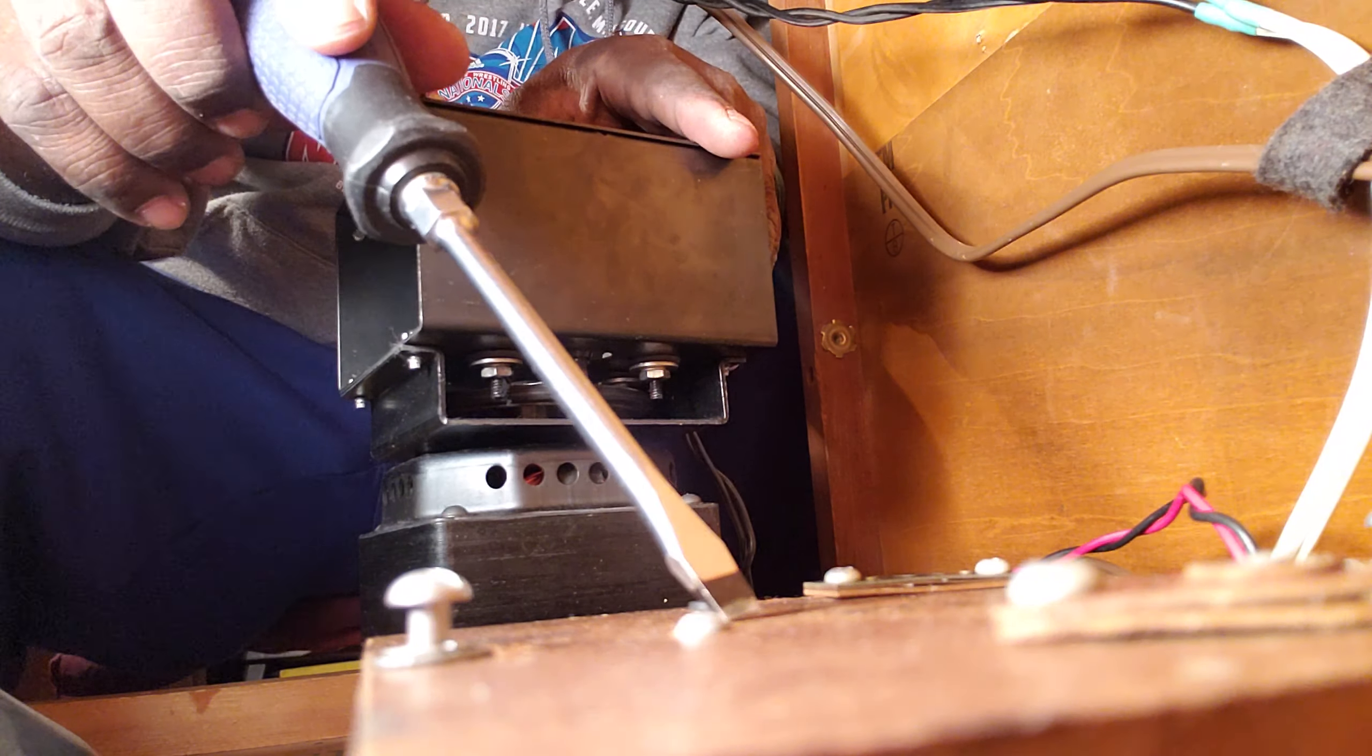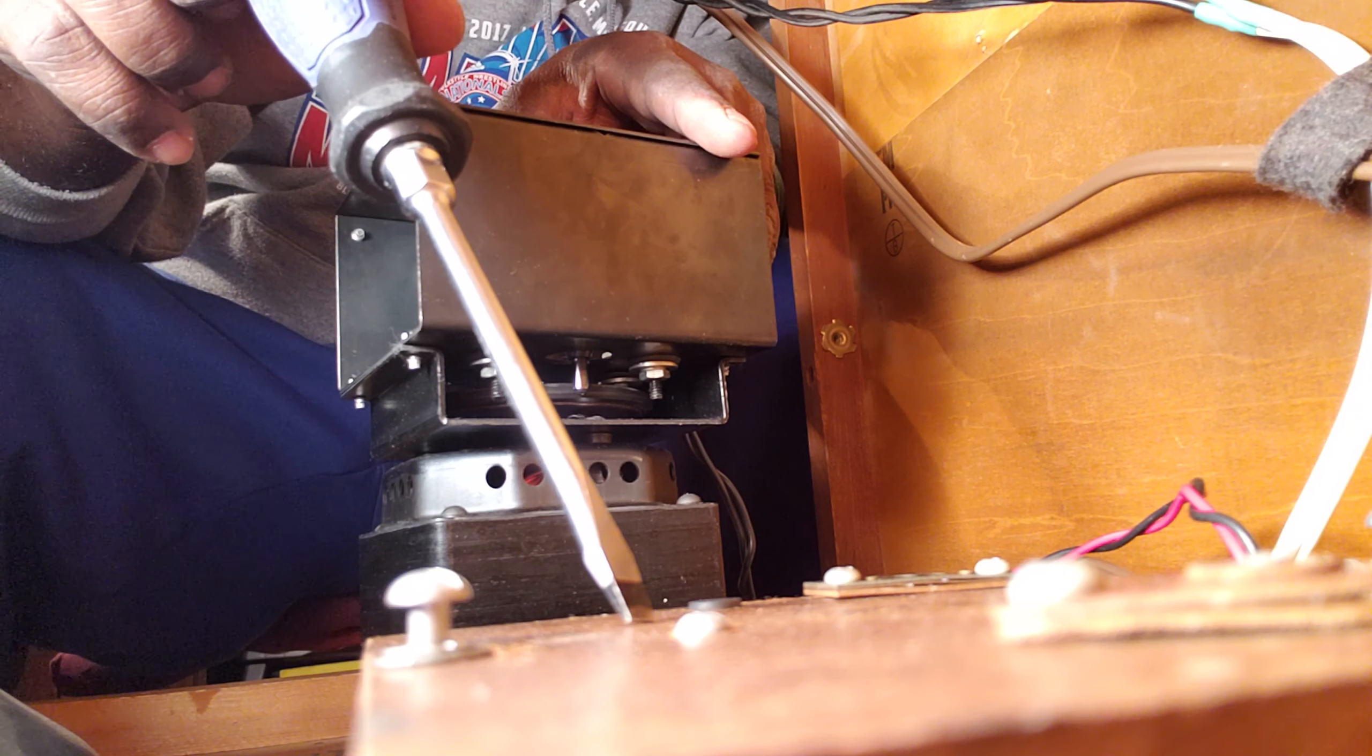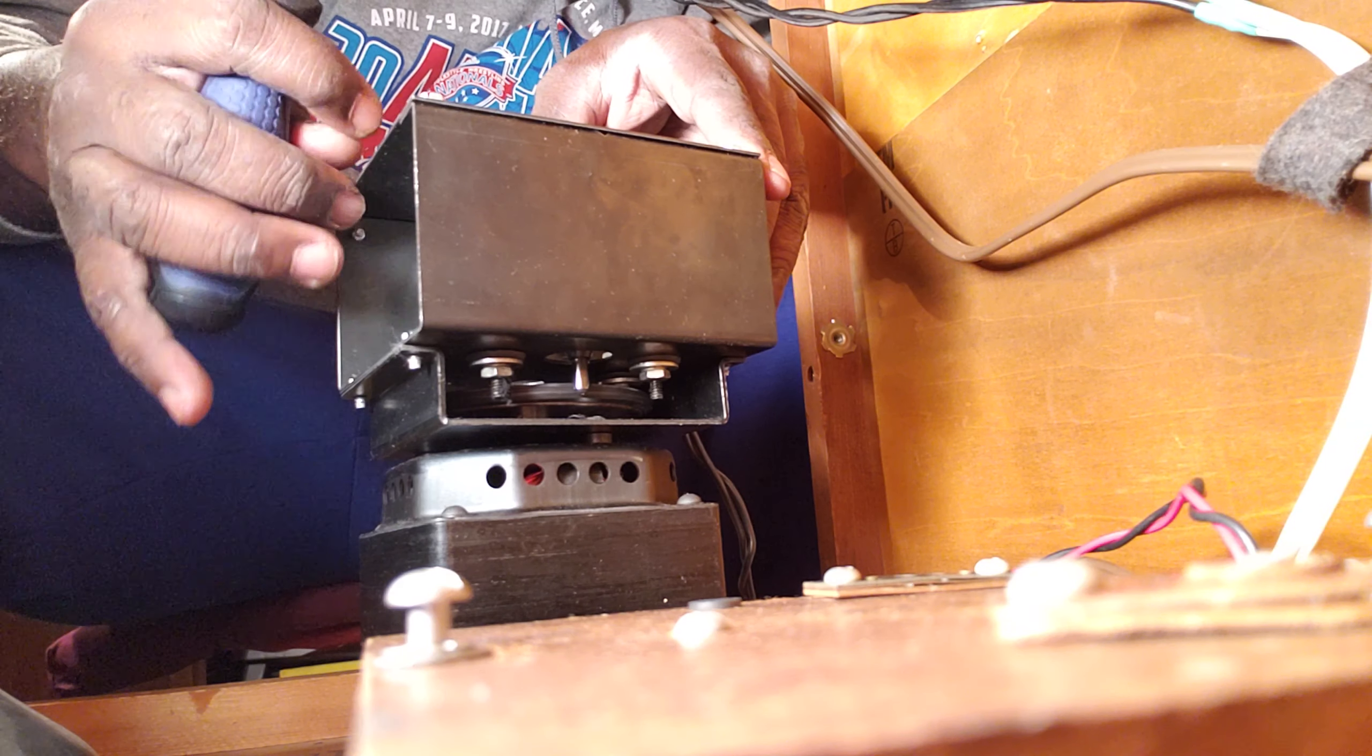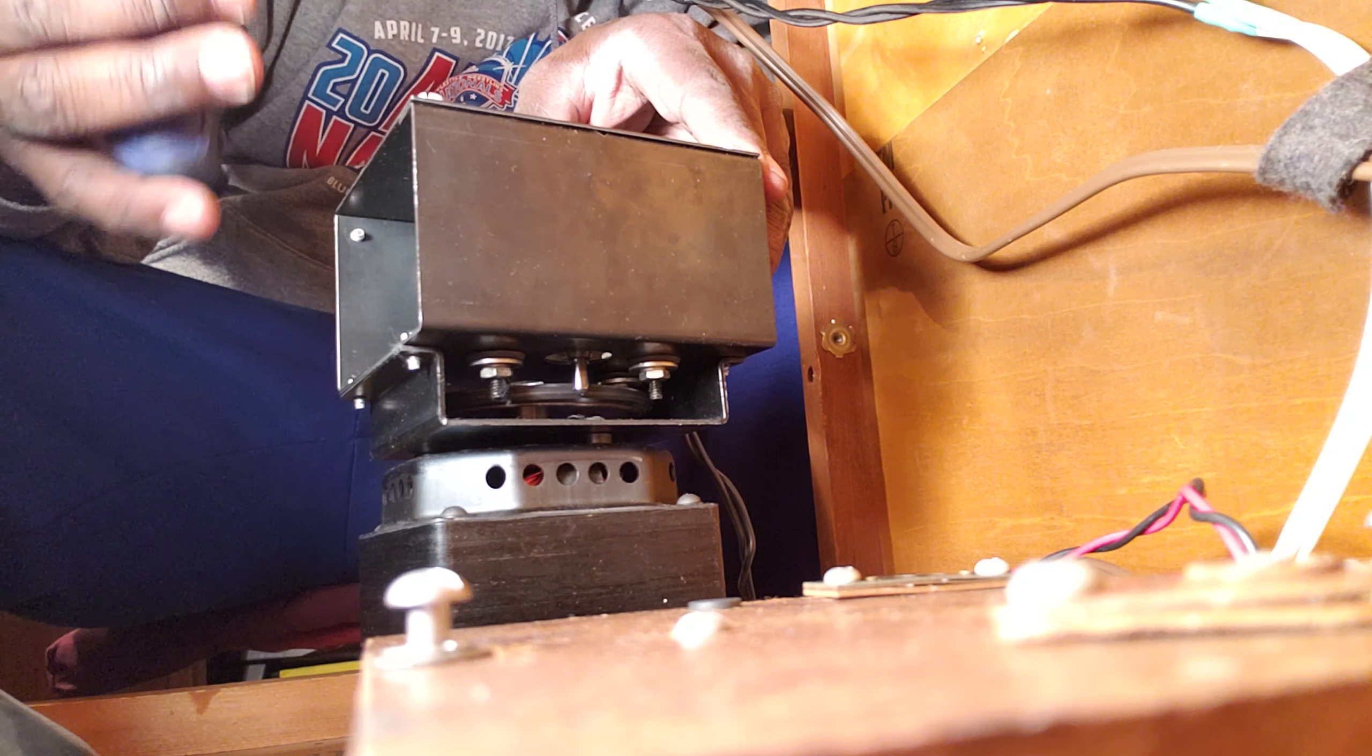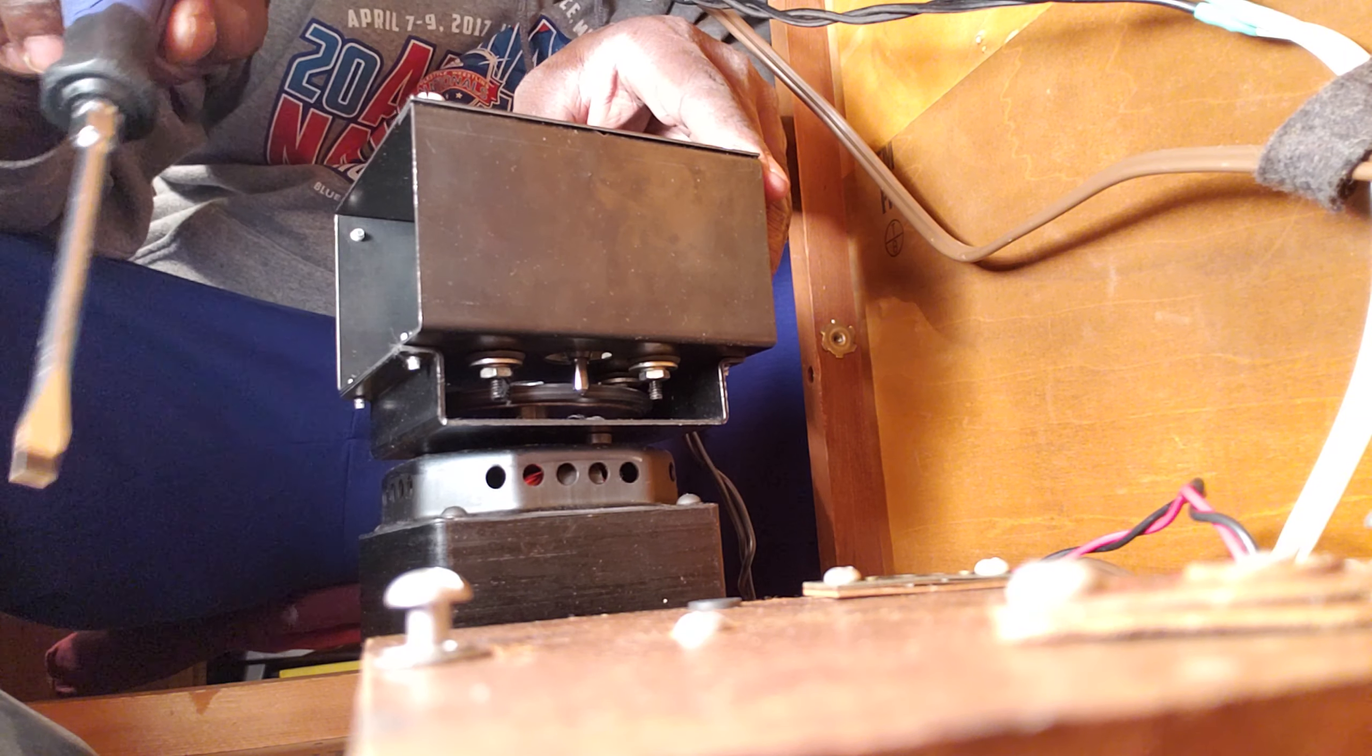This is the dividing network, also known as the crossover. It divides the frequencies here inside the Leslie, sending the upper frequencies to the upper driver, and the lower frequencies, the bass, down here to the woofer or the bass speaker.